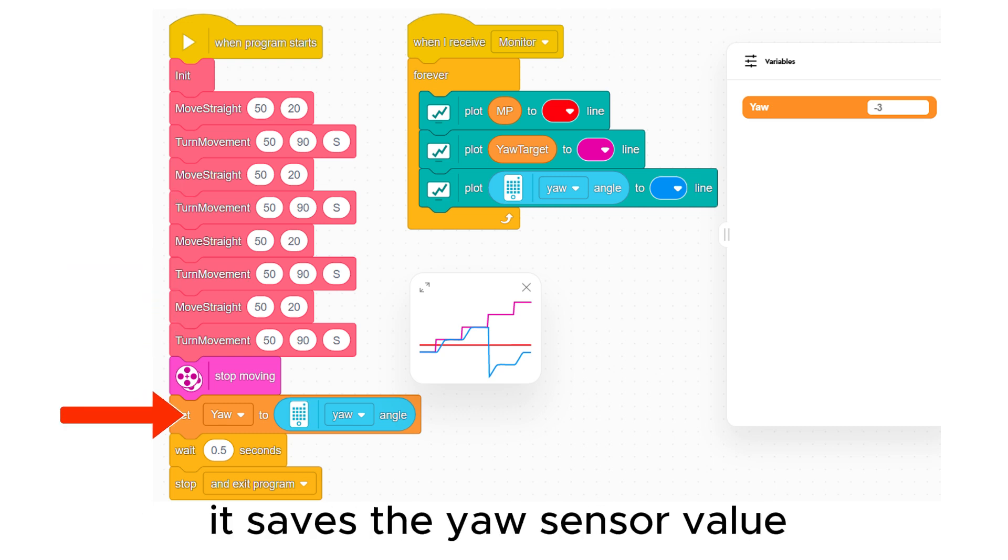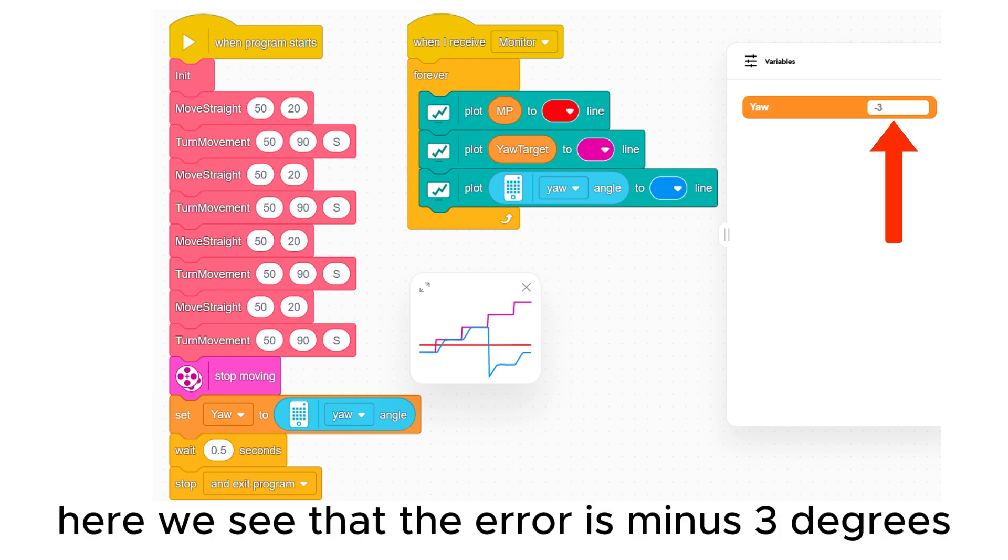Before the end, it saves the yaw sensor value in the variable yaw. Here we see that the error is minus 3 degrees.